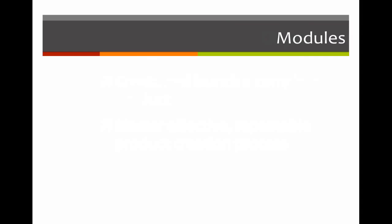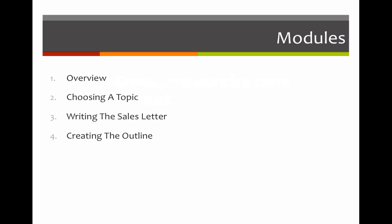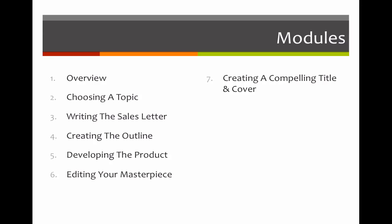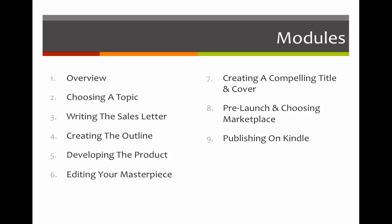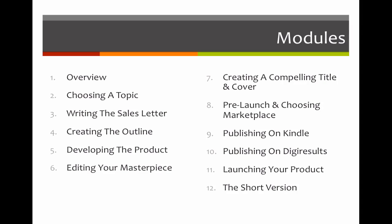There are 12 modules in the course, starting with this overview. Then we take a look at how to pick a topic, how to write a sales letter around selling that specific topic. We then create the product outline, develop the actual product, do the edits, and make sure that we've got a compelling title and cover. We then get going on the pre-launch activities and choosing a marketplace to launch. We then learn how to publish on Kindle or publish on digital results, or perhaps both, and the product launch. The final module is really a summary of all of the other modules.